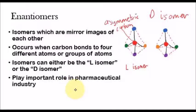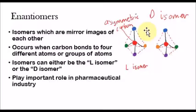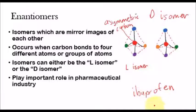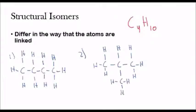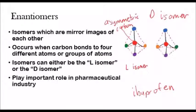Enantiomers play an important role in the pharmaceutical industry because many drugs tend to form as enantiomers. Usually only one of the isomers — either the L-isomer or the D-isomer — would be effective, and the other would not be effective at treatment. For example, with ibuprofen, the L-isomer helps with pain and is typically effective, but the D-isomer is not effective. So it plays a very important role in the pharmaceutical industry. Those are the three types of isomers: structural isomers, geometric isomers, and enantiomers.